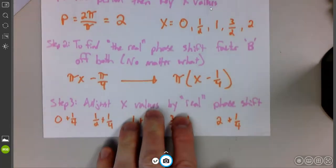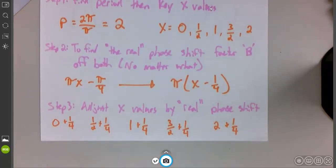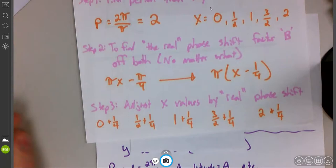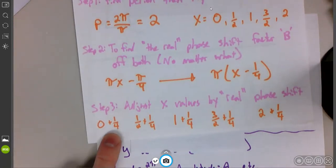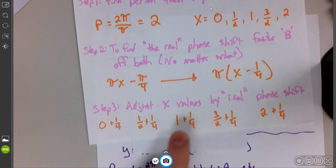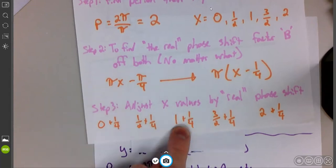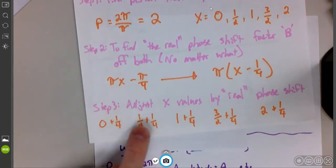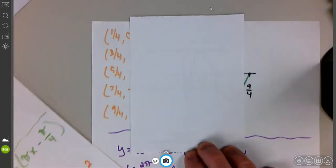We get our real phase shift. And now we're going to adjust all of our x values. So that's 0, 1 half, 1, 3 halves, and 2. I need to adjust all of them by adding, doing the opposite, adding one-fourth to each of them. When I do that, I get my real x values. The x values I'm actually going to graph. We can do some pattern recognition with this. This would be one-fourth. 0 plus one-fourth is one-fourth. Two-fourths plus one-fourth is three-fourths. Four-fourths plus one-fourth is five-fourths. It's odd multiples of a fourth here. So one-fourth, three-fourths, five-fourths, seven-fourths, nine-fourths. Those are our key x values.